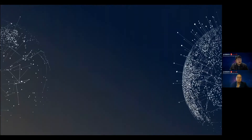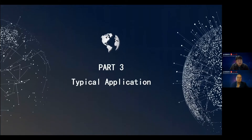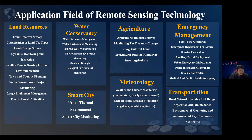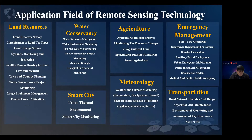Now we go to the third part of the presentation: typical applications based on image data. Remote sensing image management technology can be used in many industries and fields, such as land resources, water conservation, smart city, agriculture, meteorology, emergency management, and transportation.